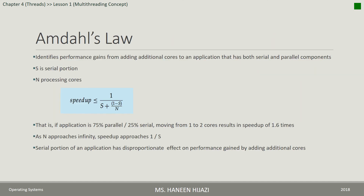Amdahl's Law: this law examines the case where an application has parts that must be serial and parts that can be parallel, and how increasing the number of cores can affect performance. A specific equation is given for the speedup that can be achieved by the system based on the serial portion and the number of available cores. The conclusion is that speed can increase up to a certain point, after which adding more cores will not increase performance further due to the serial portion present in the application.